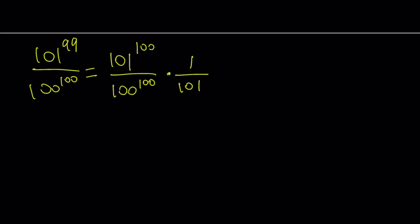Since these two expressions have the same exponent, we can use the laws of exponents or properties of exponents. If you have a to the n divided by b to the n, you can write it as a over b to the power n. We're going to write these together. So 101 over 100 to the power 100, and that is multiplied by 1 over 101.